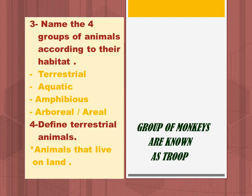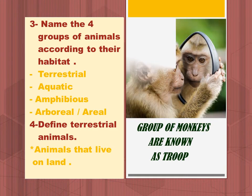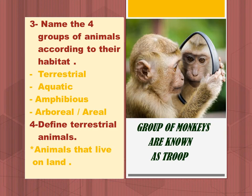The four groups of animals according to their habitat are: Terrestrial, Aquatic, Amphibious, Arboreal, or Aerial.